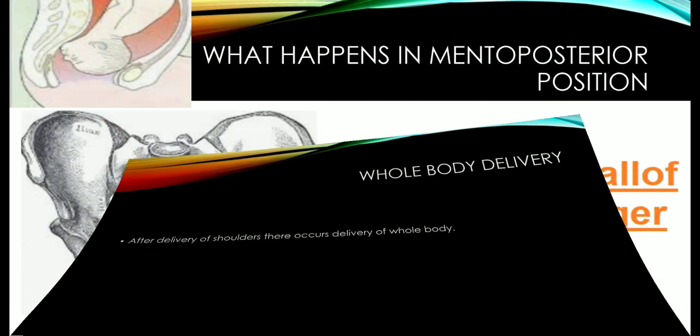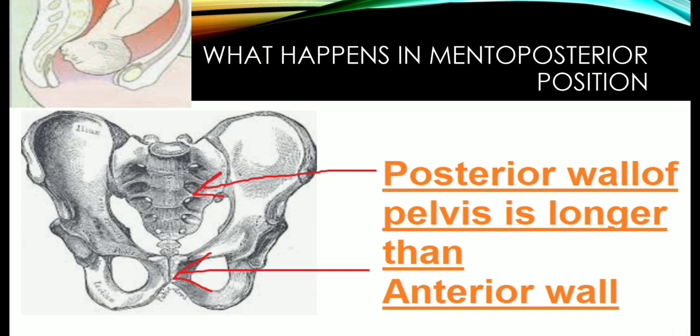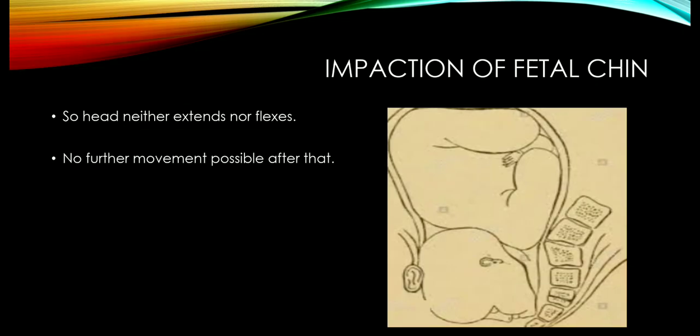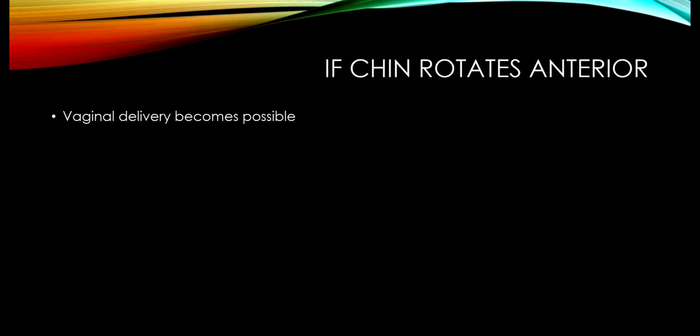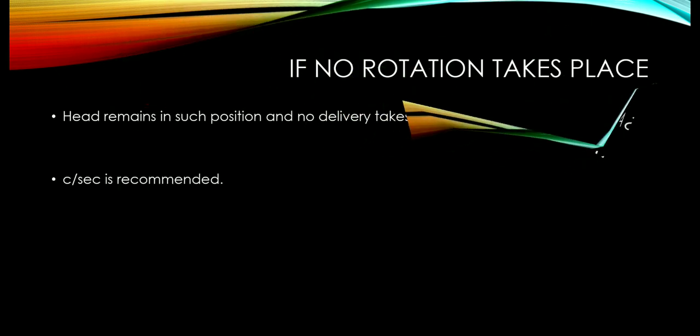That was the mento-anterior position — the favorable position. In the mento-posterior position, you have to remember that the posterior wall of the pelvis is larger than the anterior wall. The result is impaction of the fetal chin — the head neither extends nor flexes and no further movements take place. Vaginal delivery becomes possible only if the chin rotates anteriorly, which is very difficult and only occurs in an adequate pelvis. If no rotation takes place, the head remains in that position and cesarean section is recommended.